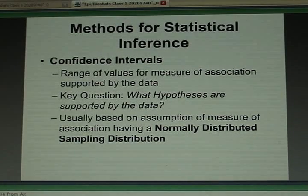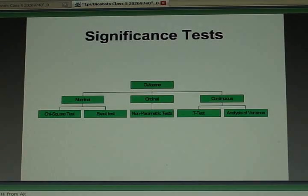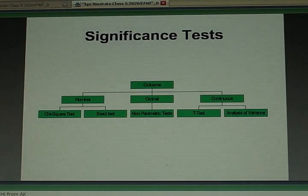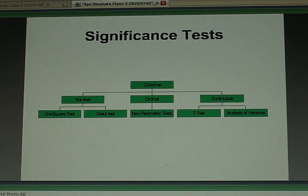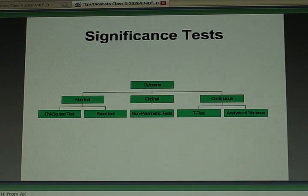But first let's talk about tests of significance. This is just a little diagram I put together that describes what types of tests of significance you will do for different types of outcomes. These are all crude tests of significance for unadjusted associations between risk factors and your outcome.